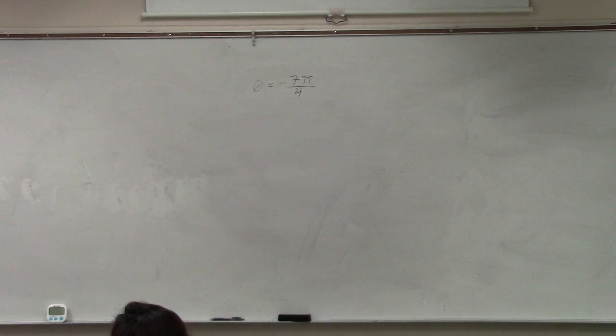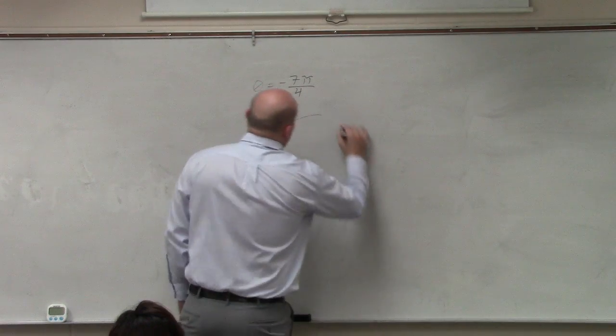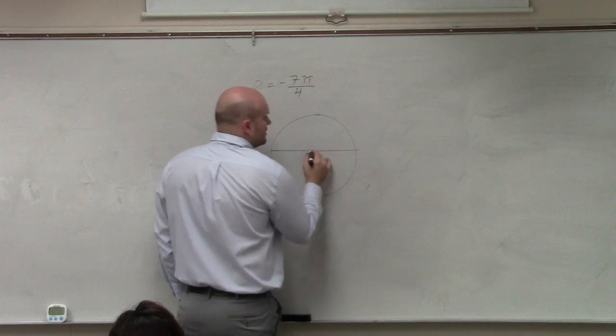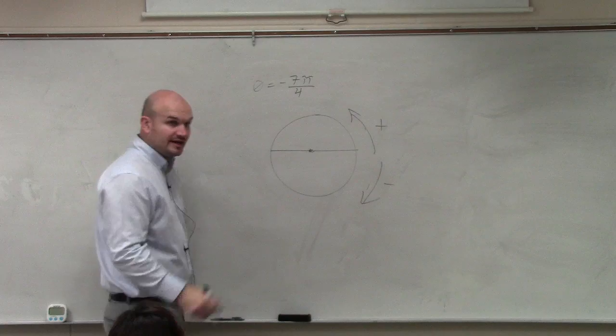In this one, theta equals 7π over 4. Just remember, going counterclockwise is positive, clockwise is negative.